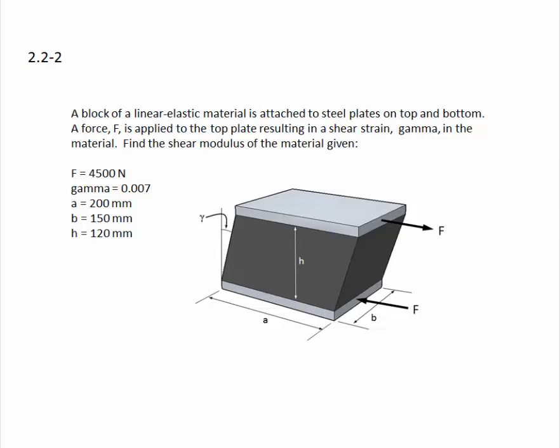Find the shear modulus of the material given these values. The force F is 4,500 newtons. Gamma is equal to 0.007, that's units of radians, which is typical for gamma. And the dimensions A, B, and H are also shown.